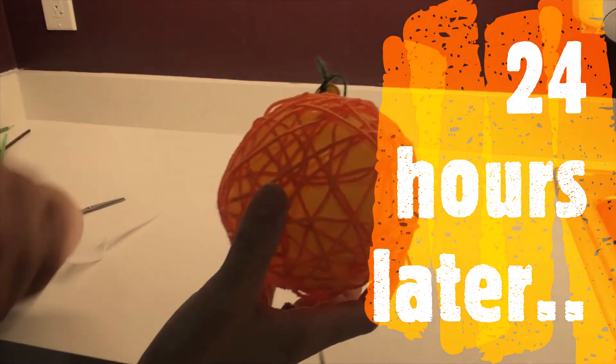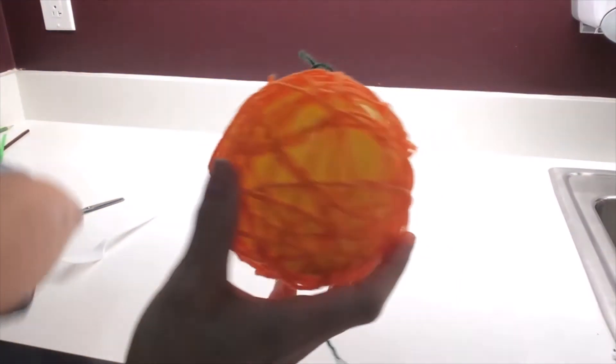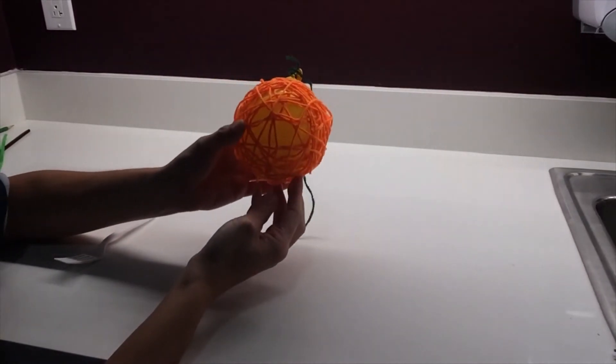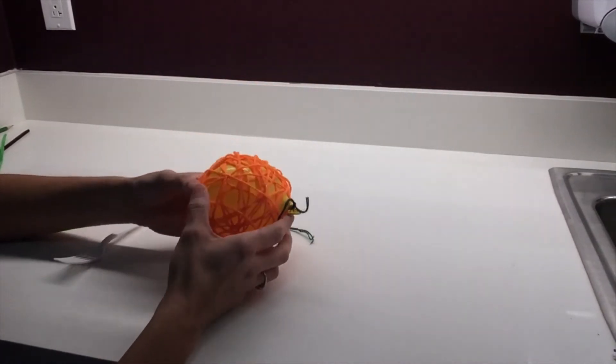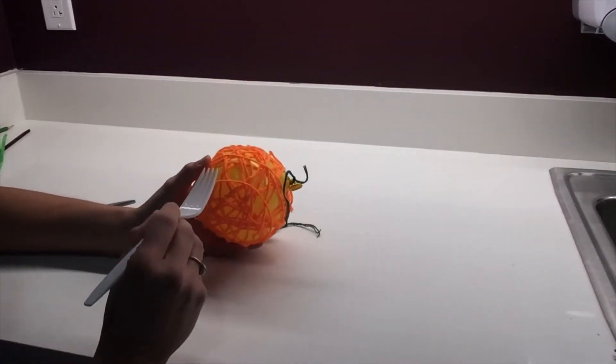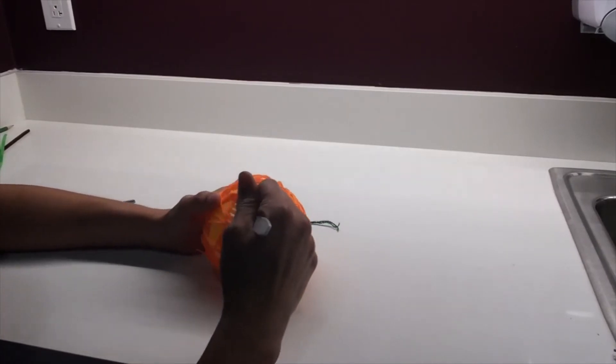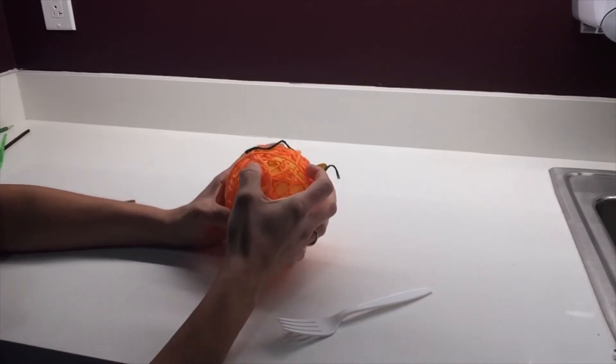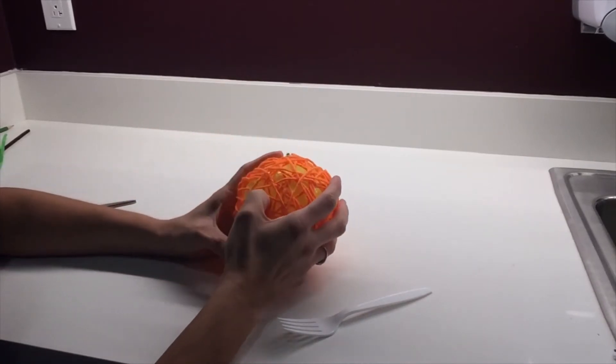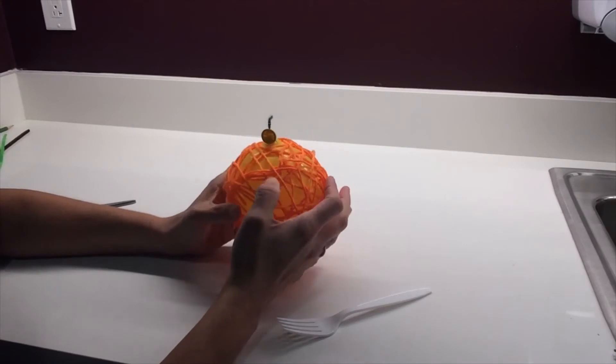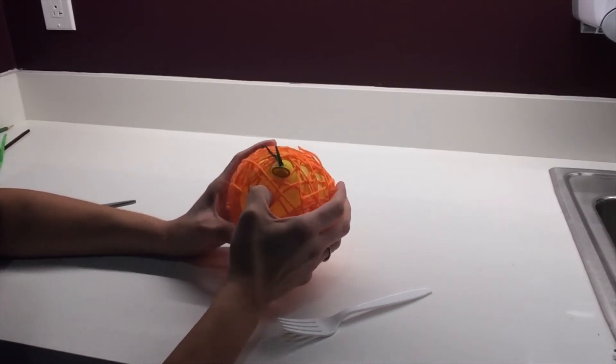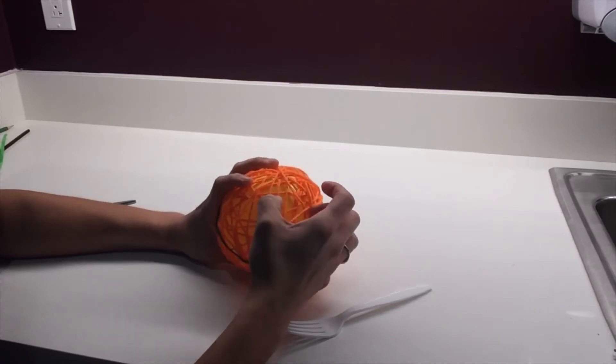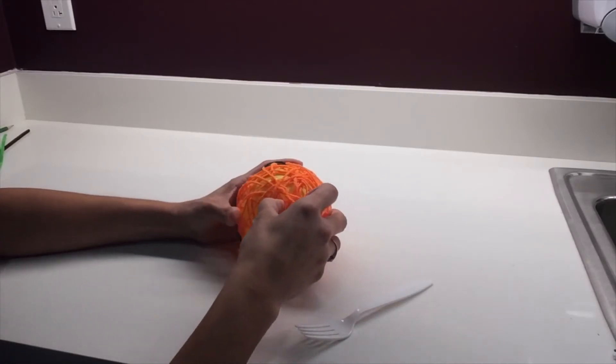Great, it's been 24 hours and our balloon is dry, or all of our yarn is now dry. So you can take it down and you'll use your fingers or the fork to separate the balloon from the yarn. Work your way around the entire balloon, making sure that most of the yarn is separated from the balloon.